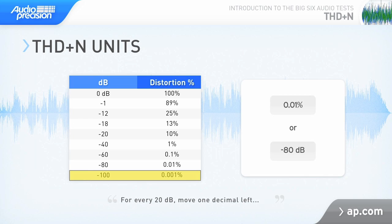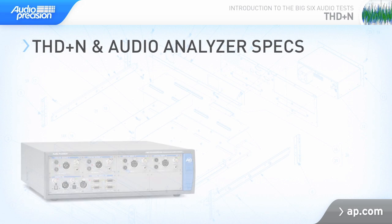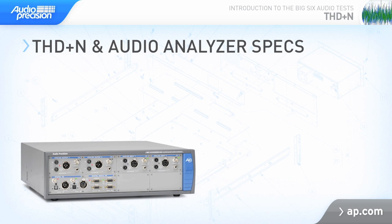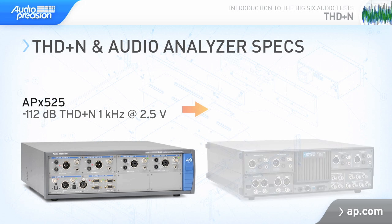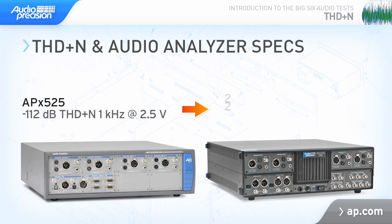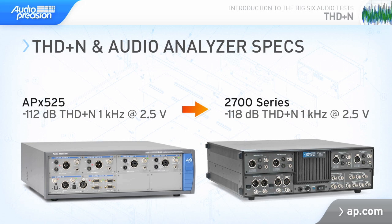A good rule of thumb is every additional 20 dB down moves the decimal one place to the left. Of course, APX calculates this for you automatically. Keep in mind when making measurements, the analyzer has to have a significantly lower THD plus N than the device under test. The THD plus N of an APX 525 is minus 112 dB, or 0.0002%, when measured with a 1 kHz signal at 2.5 volts RMS across a 20 Hz to 20 kHz bandwidth. The 2700 series has the lowest THD plus N of any audio analyzer in the world. At the same amplitude and range, it has better than minus 118 dB THD plus N, or 0.0001%.